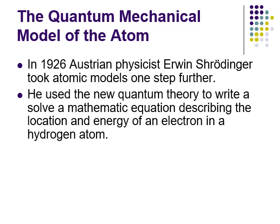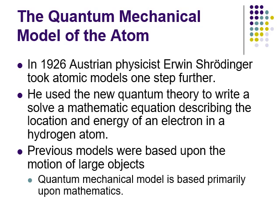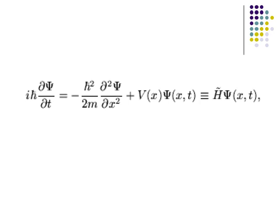All previous models were based on the physics of large objects — we assumed electrons moved like objects we know. The quantum mechanical model, however, is based primarily on advanced mathematics. Here is a very blurry image of the Schrödinger equation. You don't have to solve this; as a chemistry major, you would tackle it around your senior year of college with multivariable calculus to back it up. It just looks scary right now.